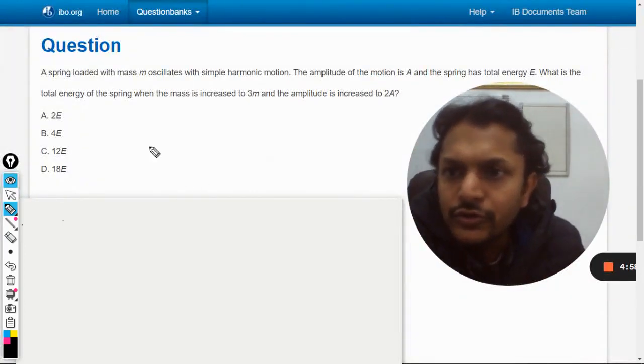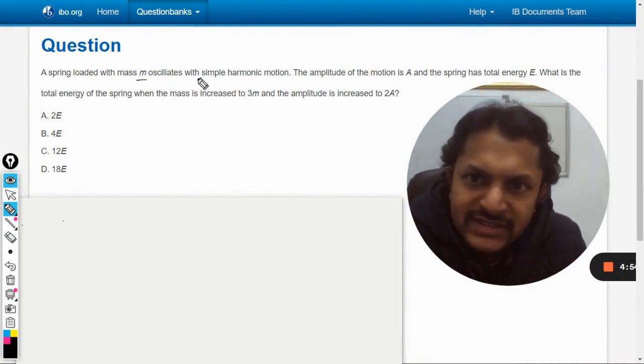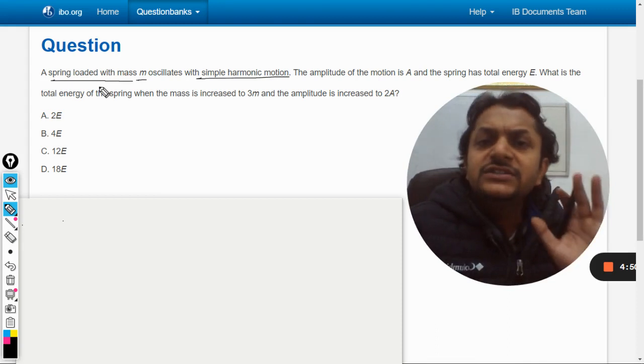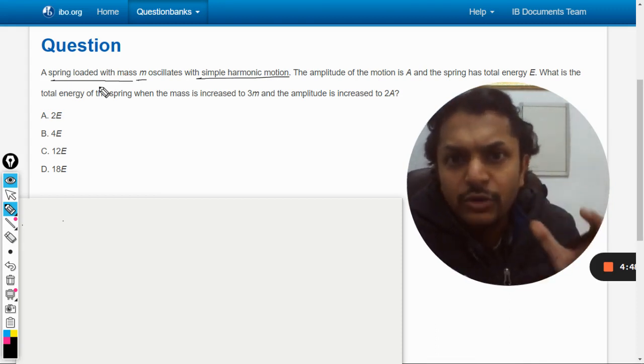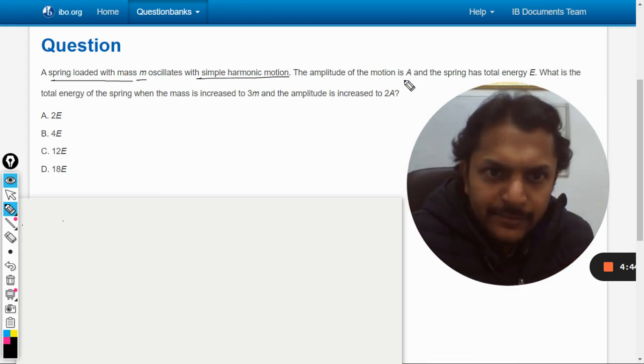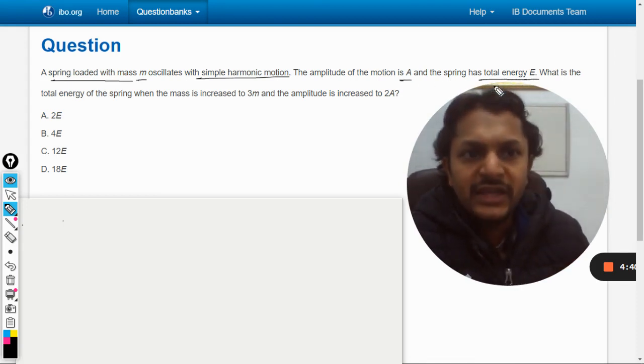Okay, dear students, let us see how to do this question. A spring loaded with mass m oscillates with simple harmonic motion. So there is this spring-mass system, and it is given that it is moving in simple harmonic motion. The amplitude of the motion is capital A and the spring has the total energy of capital E.